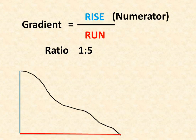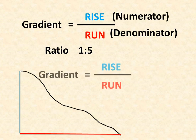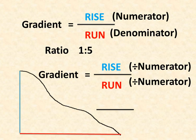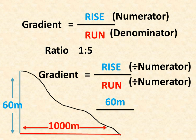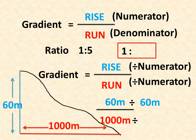Now we need to bear in mind that the rise and the run are both the numerator and the denominator. In order to get a ratio, we need to divide both the rise and the run by the numerator. So imagine the rise was 60 metres for this mountain and the run was 1000 metres. Simply calculating 60 divided by 1000 would not give us a ratio. So we divide 60 by 60, which gives us 1. Then we divide 1000 by 60 as well, which gives us 1 to 16.7 metres. And that's how we calculate it.